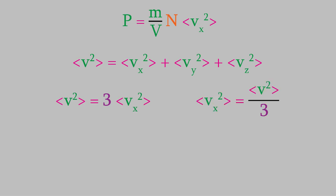When we substitute vx² = v²/3 into our equation for pressure, we get an even better equation. It doesn't force us to add the velocity of every single particle, and it doesn't focus only on velocity along one dimension. Instead, it contains the average overall velocity, which is much more reasonable.